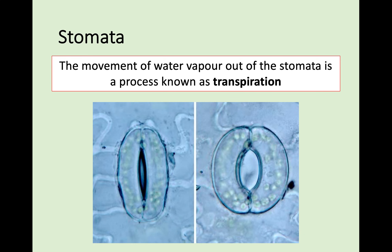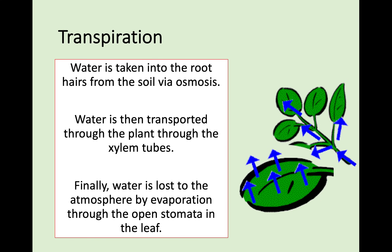The movement of water vapour out of the stomata is a process called transpiration. It's almost a roundup of everything in this lesson: water is taken into the root hairs from the soil via osmosis, then water goes up through the plant through the xylem tubes, and finally water is lost to the atmosphere by evaporation through an open stomata. Three simple stages - in through the root hairs, up through the xylem, and out through the stomata.